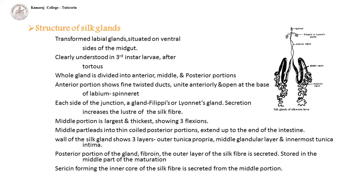The middle portion is the largest and thickest portion, showing 3 flexions. The middle part leads into thin, coiled posterior portions that extend up to the end of the intestine. The wall of the silk gland shows three layers: outer tunica propria, middle glandular layer and innermost tunica intima. From the posterior portion of the gland, fibroin, the outer layer of the silk fiber, is secreted and stored in the middle part until maturation. Sericin, forming the inner core of the silk fiber, is secreted from the middle portion.